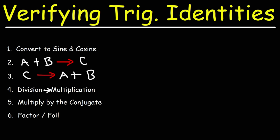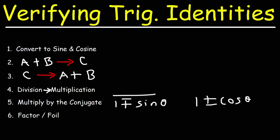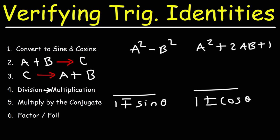Number five: sometimes you need to multiply by the conjugate. If you see one plus sine, or one minus sine, or one plus or minus cosine on the denominator of a fraction, that's a good indication you need to multiply by the conjugate. For step six, sometimes you need to factor, other times you need to FOIL — the same techniques from algebra apply. You may see differences of perfect squares or factorable trinomials.